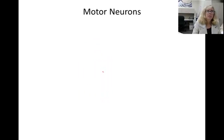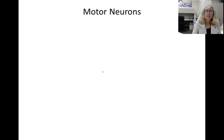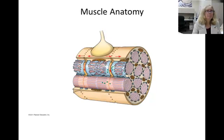In our last major topic we'll discuss motor neurons. These do not synapse onto other neurons; instead they synapse onto muscle. Let's look at some anatomy and then study some physiology. You'll find this image at the back of chapter 50 in your book — please pause the video and label the image.